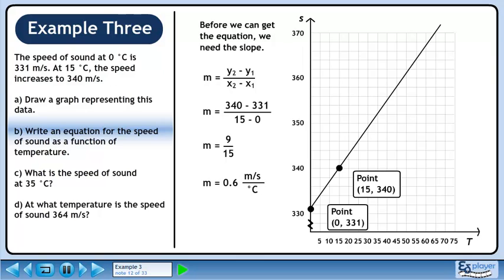In science, we typically express measured quantities as a decimal rather than a fraction, so write the slope as 0.6. The units are meters per second per degree Celsius since the y-axis is speed and the x-axis is temperature.